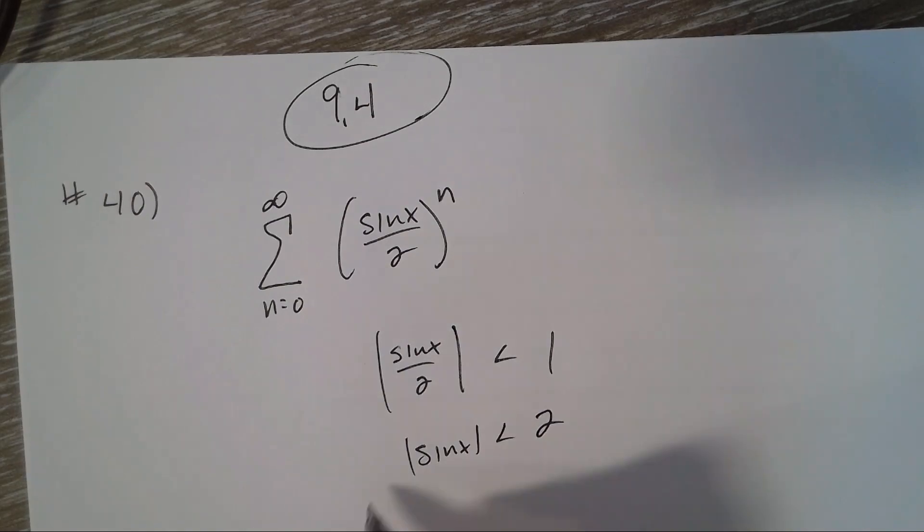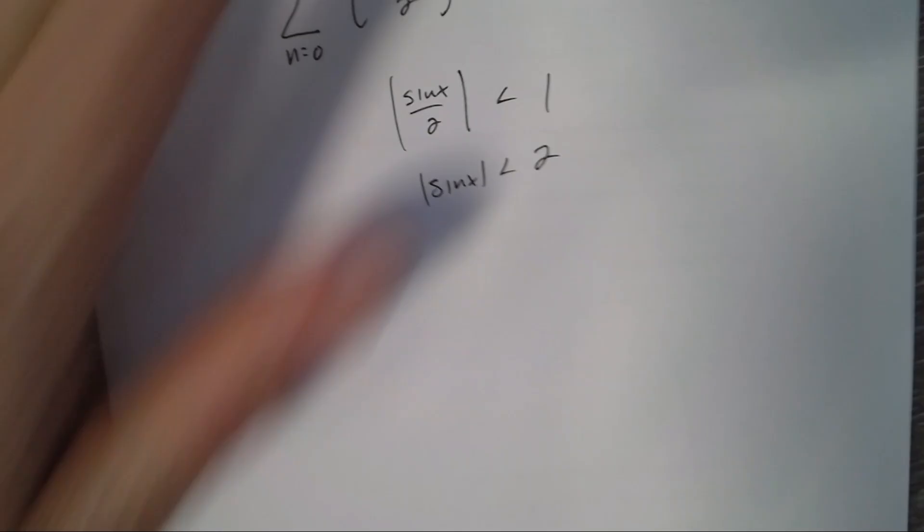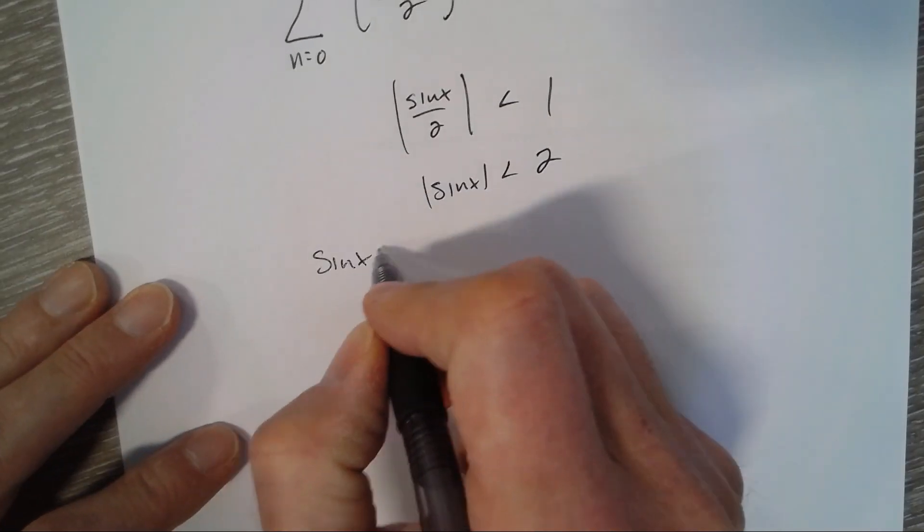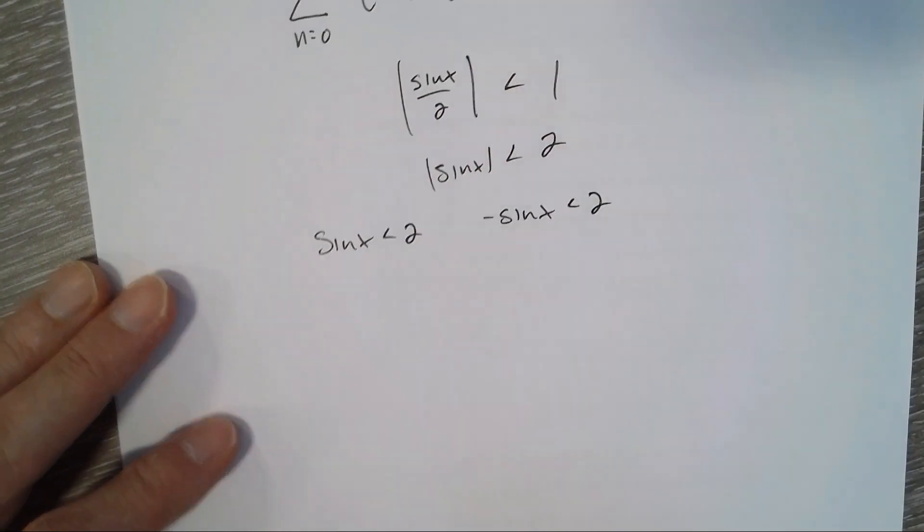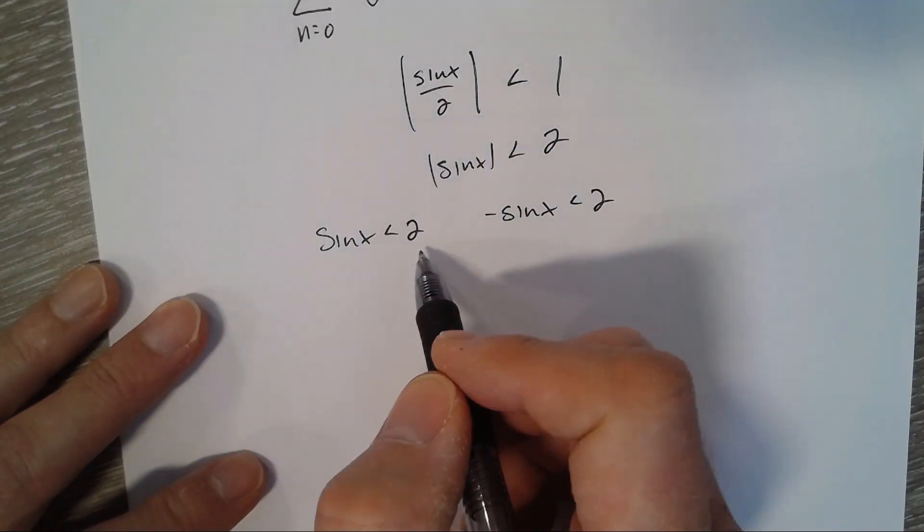So we have two inequalities there. You can say sin x is less than 2 and the opposite, negative sin x, is less than 2. Solving those two inequalities,